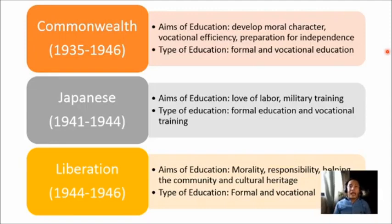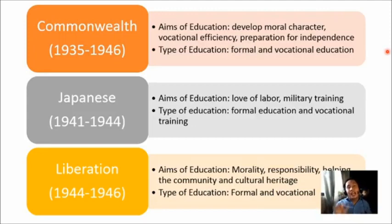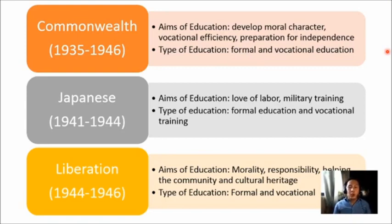The type of education during the Commonwealth Period was formal and vocational. Eight original normal schools were formed, including Cebu Normal School (now Cebu Normal University). Elementary education was reduced from seven to six years, and Grade 1 entry at age seven became compulsory. The medium of instruction was Filipino, and Filipino subjects were introduced. This was the time of President Manuel L. Quezon's push for a national language — our own identity as Filipinos.